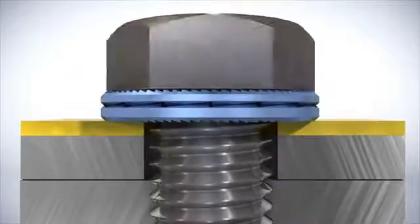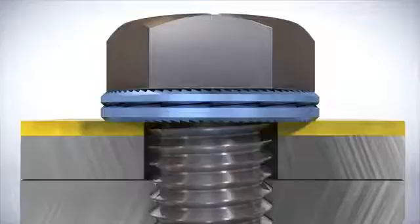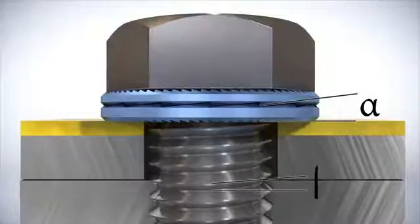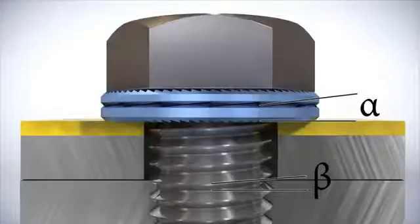Upon tightening, the washers flatten and the serrations engage the contact surfaces. Since the cam angle alpha is greater than the thread pitch beta, the wedge locking effect will prevent any rotation of the fastener.